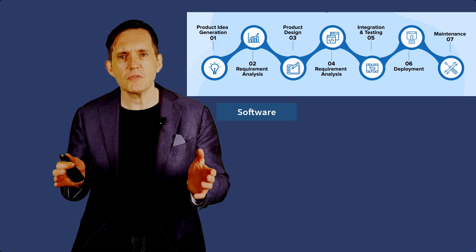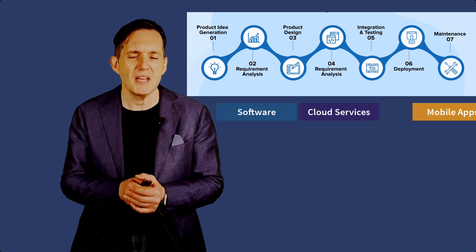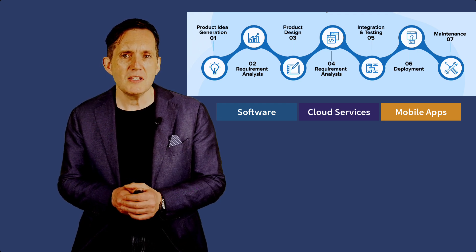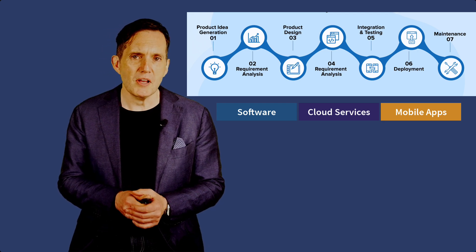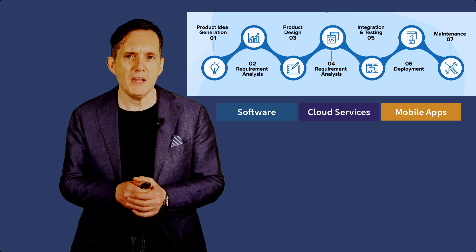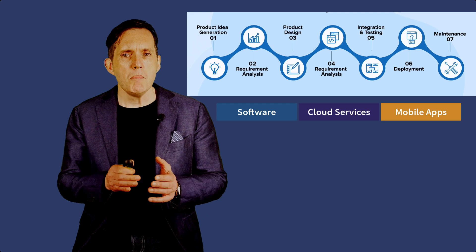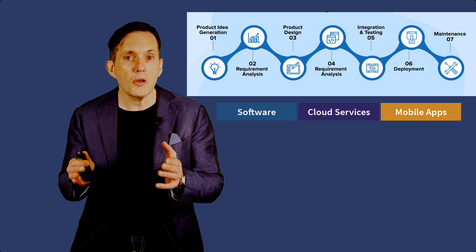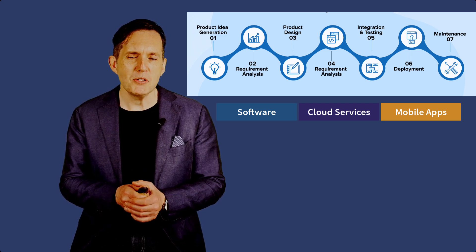Now let's talk about the different types of software. There's standalone software, cloud-based services and mobile applications. Standalone software, like a word processor or a photo editor, is installed and run on individual computers. Cloud-based services like Google Docs operate on remote servers and are accessed over the internet, offering the advantage of accessibility from any device with internet connectivity. Mobile applications are designed specifically for smartphones and tablets, providing users with on-the-go functionality tailored to smaller screens and mobile use cases.